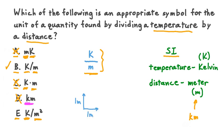It's this unit, square meters, that we see in the denominator of option E. So E is not showing us a temperature divided by a distance, but it's showing us a temperature divided by an area. Therefore, it also isn't the symbol we're looking for. So then, option B really is our final answer. The symbol for the quantity found by dividing a temperature by a distance in the SI system is capital K for kelvin divided by lowercase m for meters.